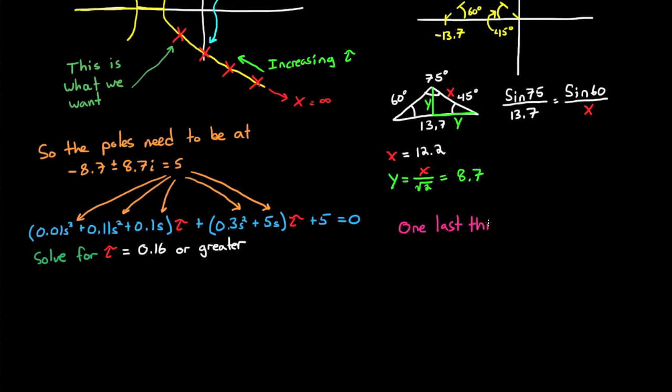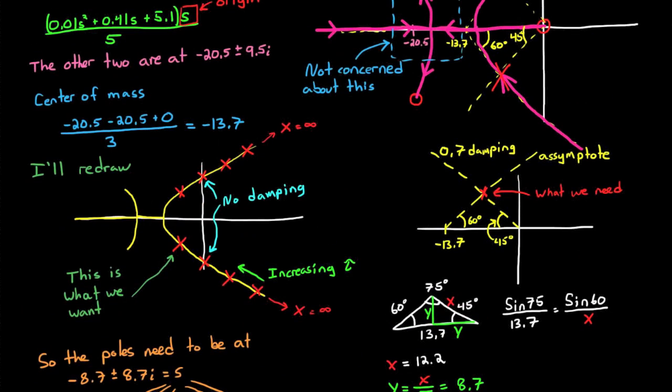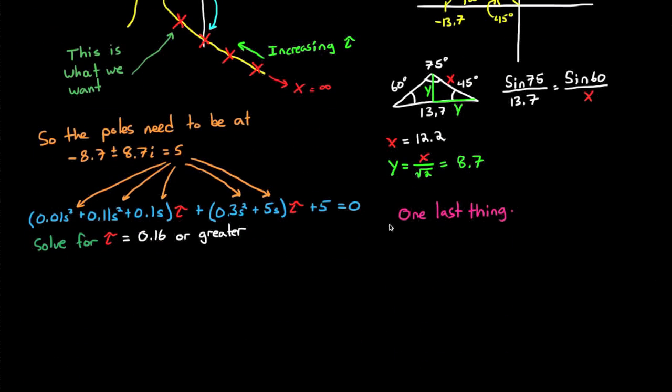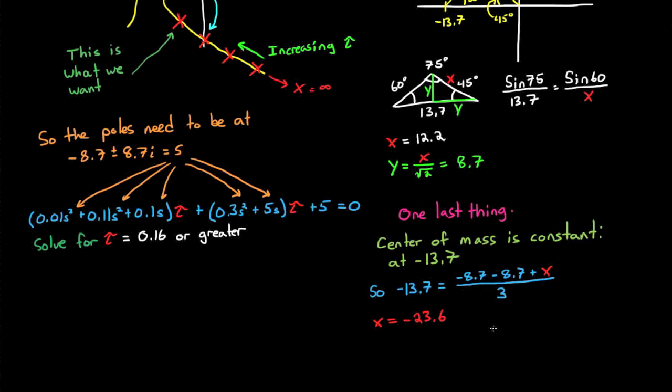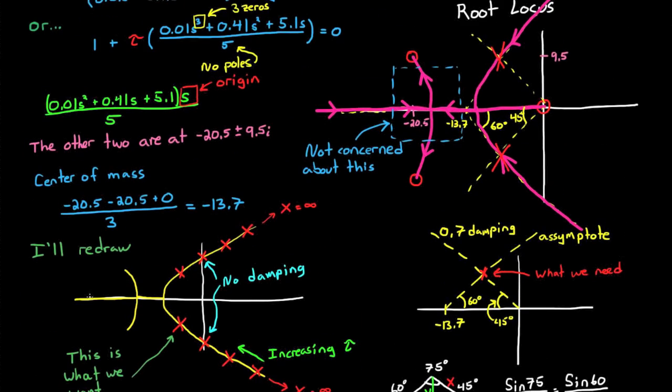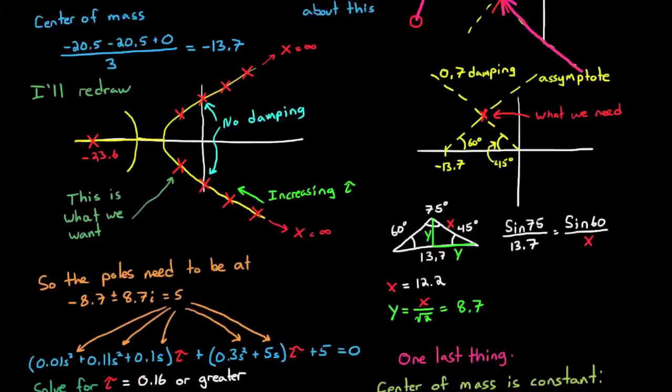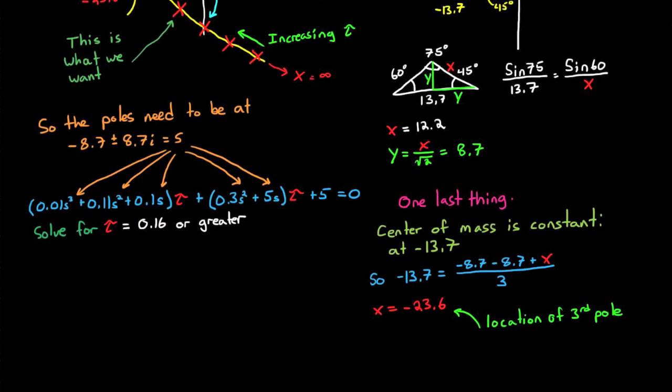The last thing I want to estimate is the location of the third pole. And this is really easy since we know that the center of mass of the poles stay constant when we adjust the gain, which we solved earlier to be minus 13.7. And since our two poles are at minus 8.7, it's really easy to determine that the third pole needs to be at minus 23.6. And even though this graph up here is looking like a bit of a mess, I'll just draw it in anyway. And that's the end of the problem. But let's go over to MATLAB and redo it and see how we did with our estimations.